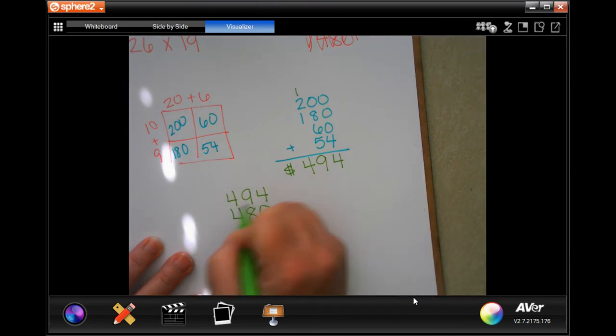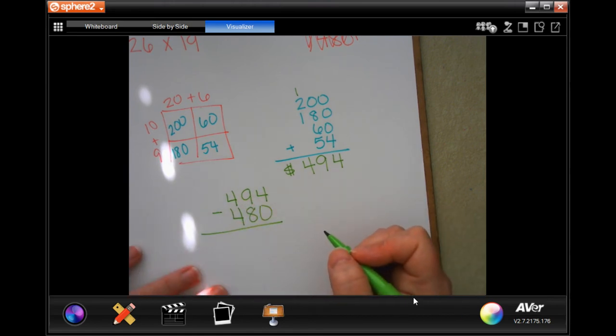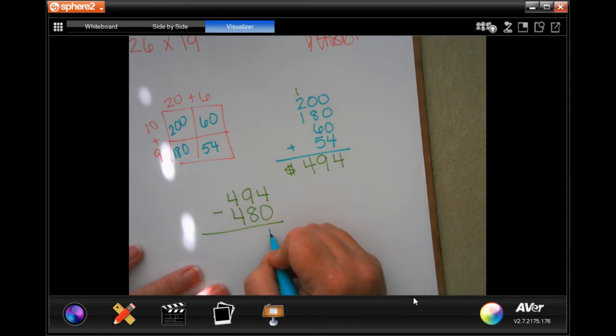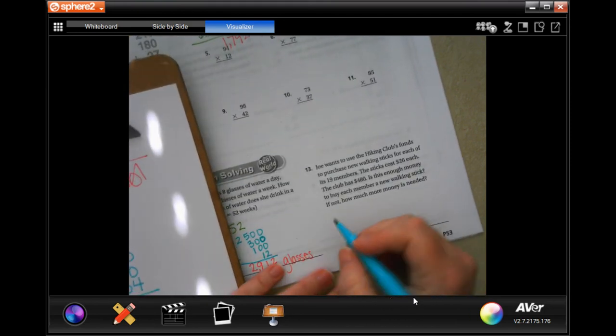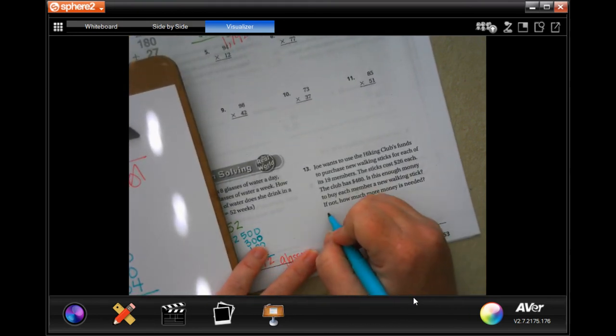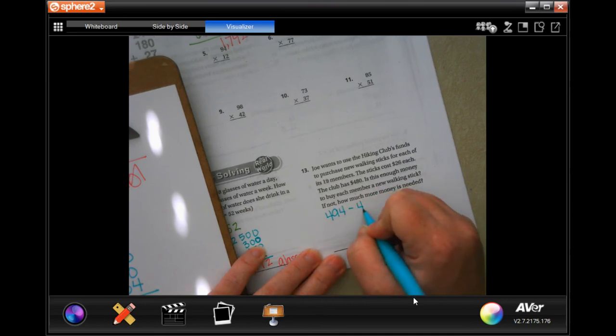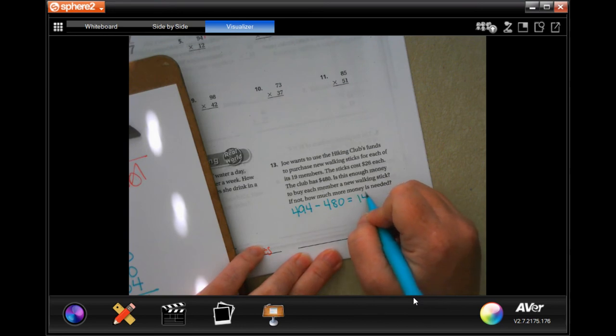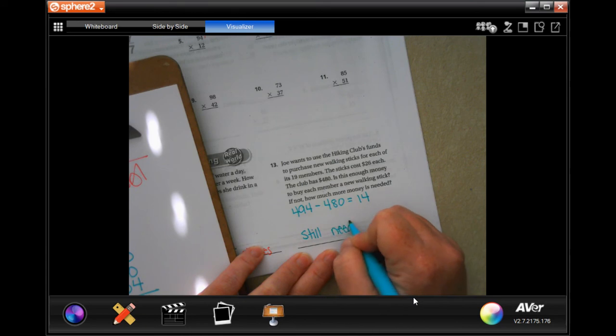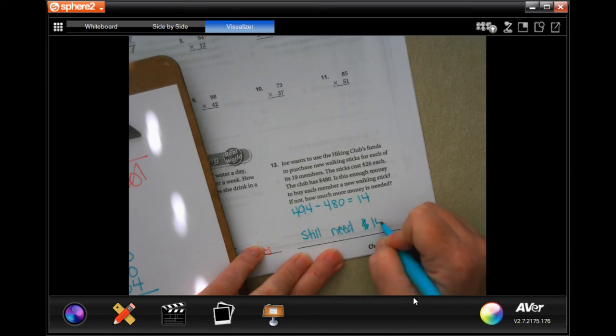So I'm going to take what I need and subtract what I have. And that will tell me how much more I still need after what I've already got. 4 minus 0 is 4. 9 minus 8 is 1. That's 0. So I would still need $14. Over here I would put the $494 minus the $480, and I would put my $14. And then I would put still need $14.